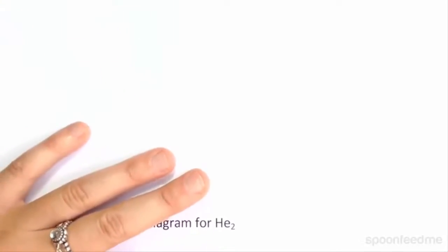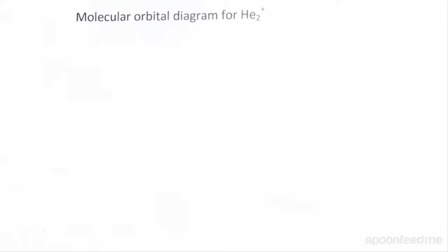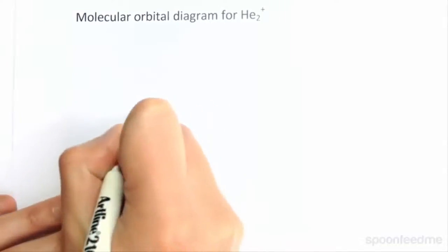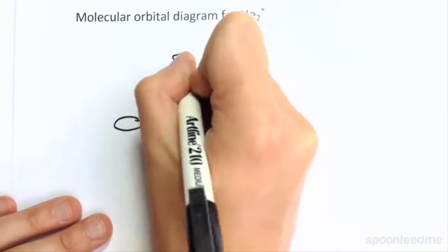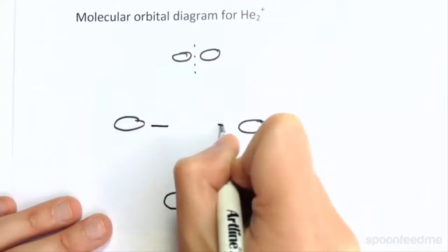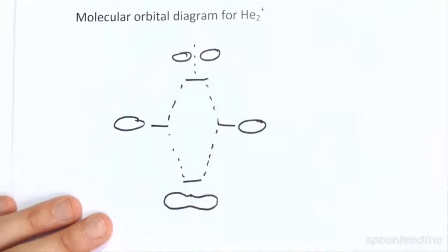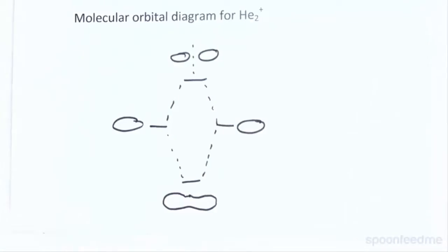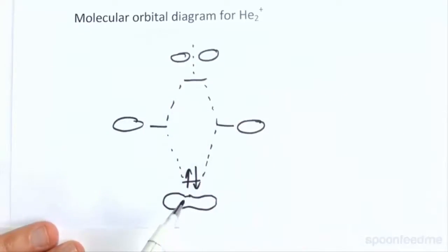So what about if we had three electrons, as we do, for example, in helium-2 plus? Let's draw the diagram out. We've already filled up our bonding orbital with two electrons. Our two electrons have already gone into the bonding orbital.